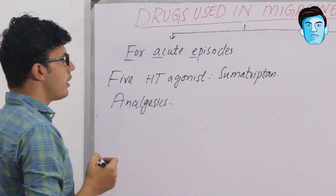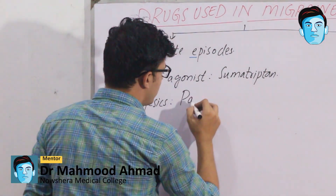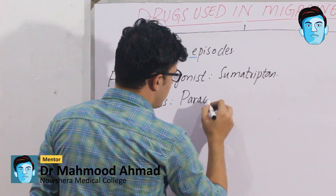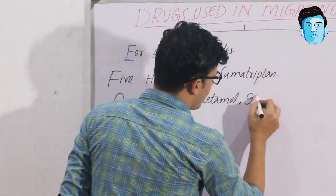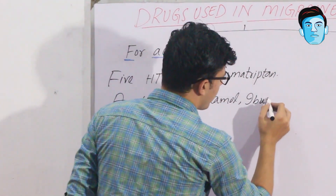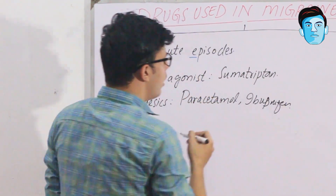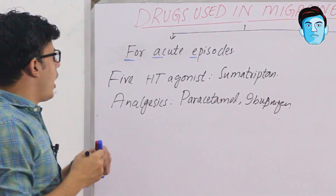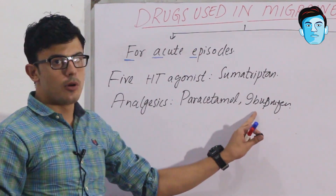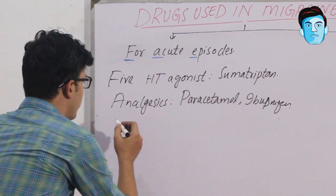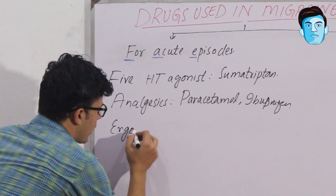A stands for analgesics. In the category of analgesics, we have paracetamol and ibuprofen. Now E stands for ergot alkaloids.